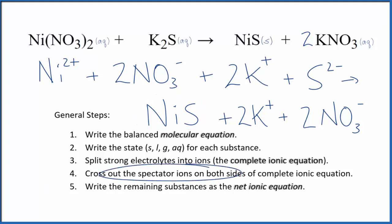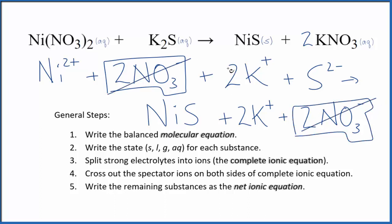Now we can cross out spectator ions. They're on both sides. In the reactants here, I see that we have these two nitrate ions right here, and again in the products, two nitrate ions. These are spectator ions, and we can just cross them out. Same for these two potassium ions here in the reactants and in the products. These are spectator ions, cross them out.